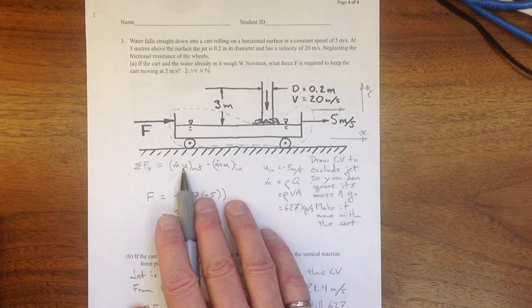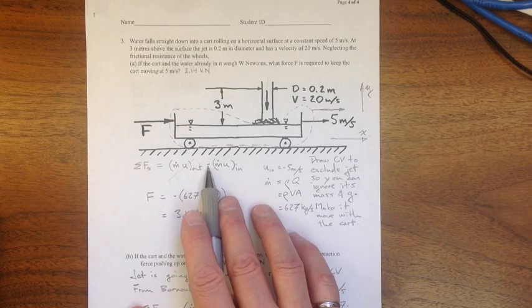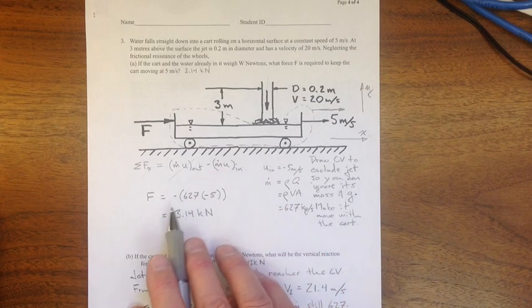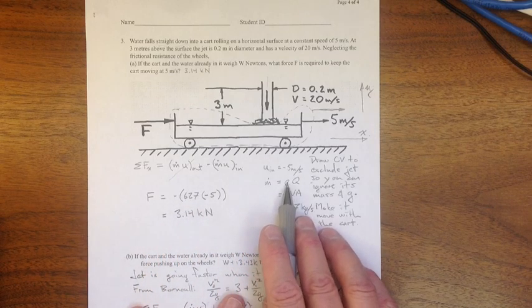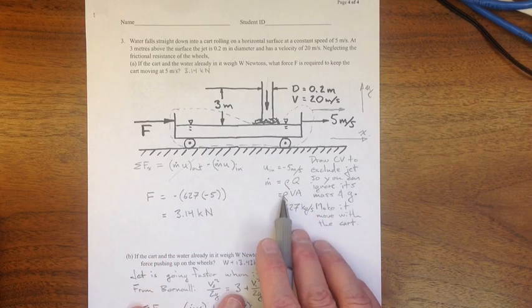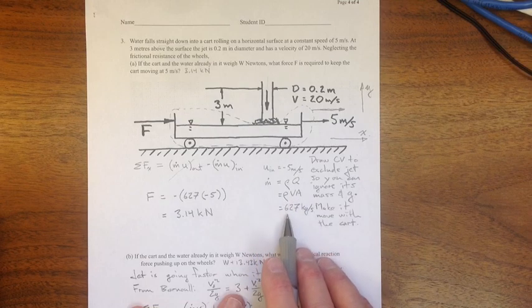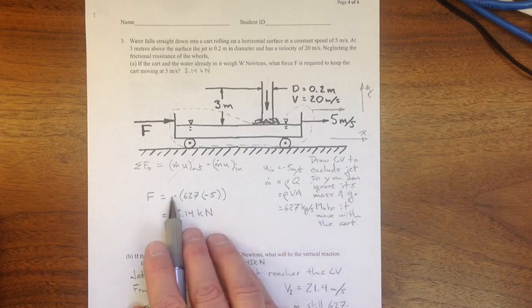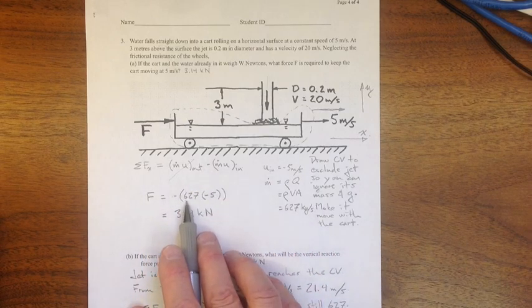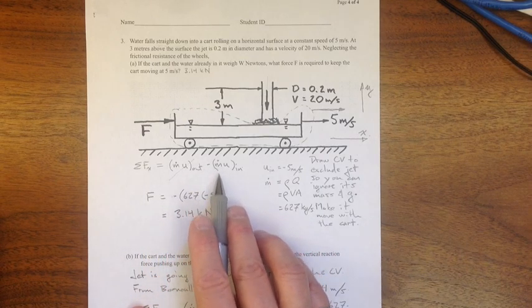And m dot u out, nothing's leaving the control volume. So I'm only left with negative m dot u in. Negative, m dot will be density times volume flow rate, or rho times v times a, which turns out to be 627 kilograms per second. Negative from here, 627,